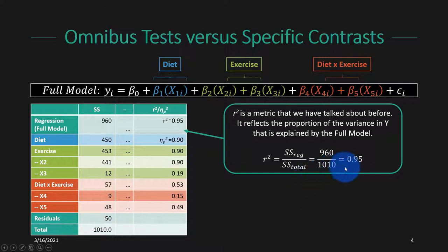This is essentially how much variance we explained divided by how much variance there was to begin with. In this example we get a pretty astronomical r-squared — we explained 95% of the variance in the dependent variable with our diet and exercise intervention. That's nice for a textbook example, but it's pretty rare in practice, and if I saw an r-squared that big, I'd go back and double-check everything to make sure no mistakes were made.